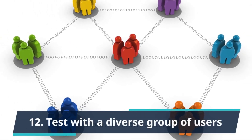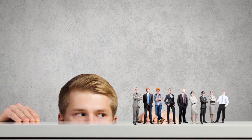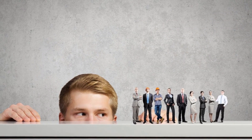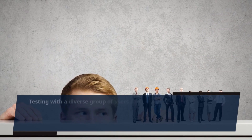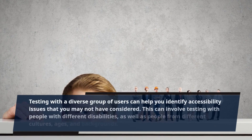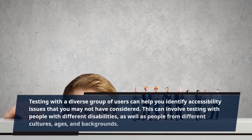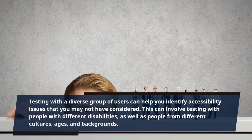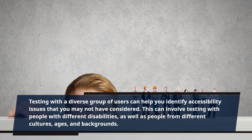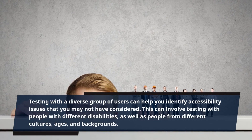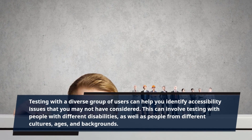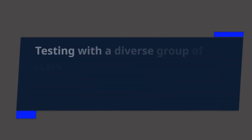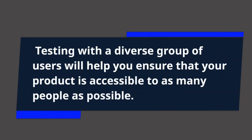Tip 12: Test with a Diverse Group of Users. Testing with a diverse group of users can help you identify accessibility issues that you may not have considered. This can involve testing with people with different disabilities, as well as people from different cultures, ages, and backgrounds. Testing with a diverse group of users will help you ensure that your product is accessible to as many people as possible.